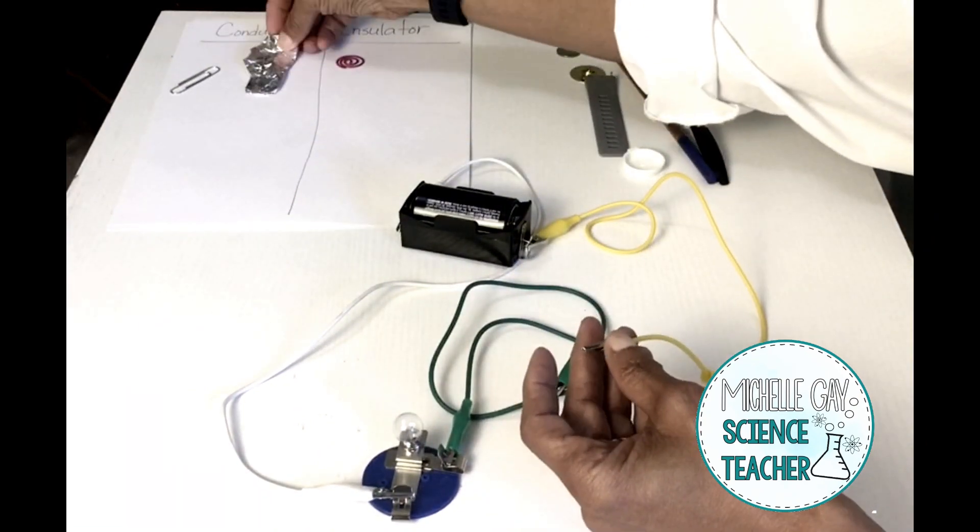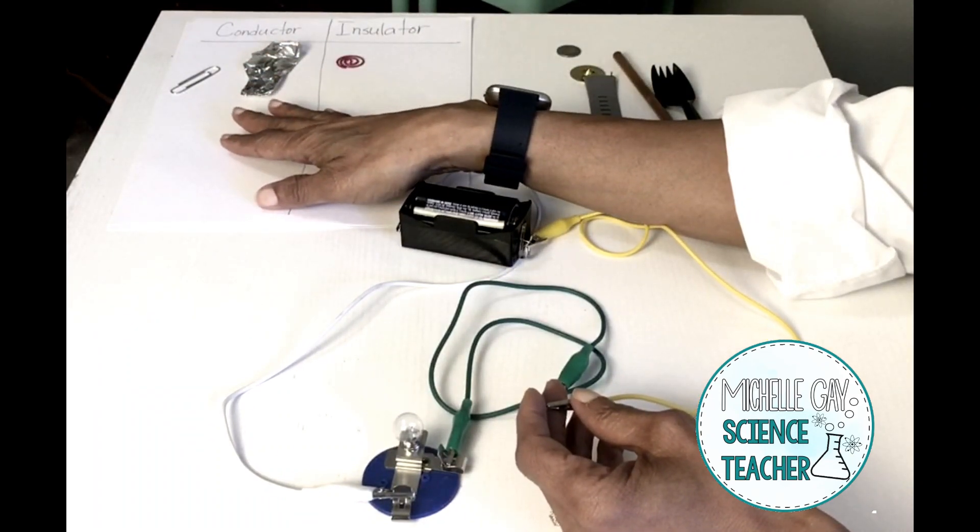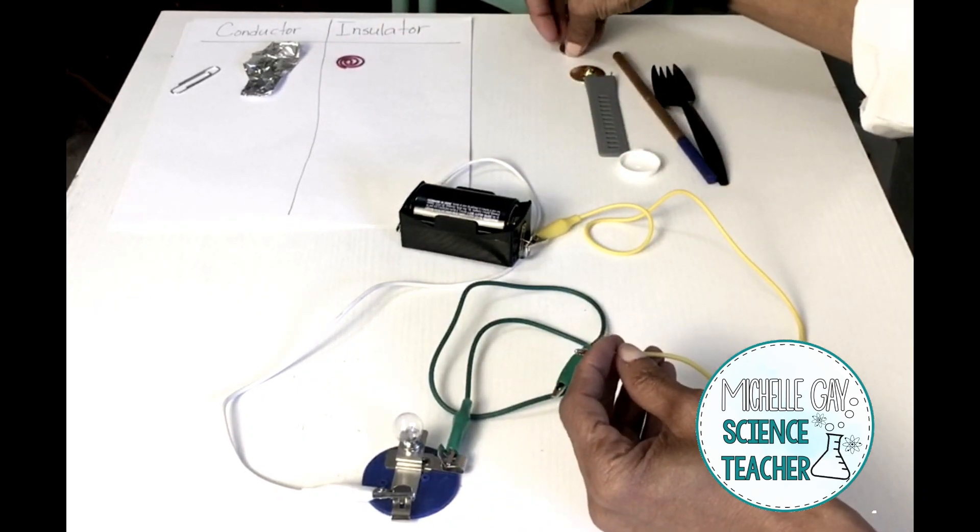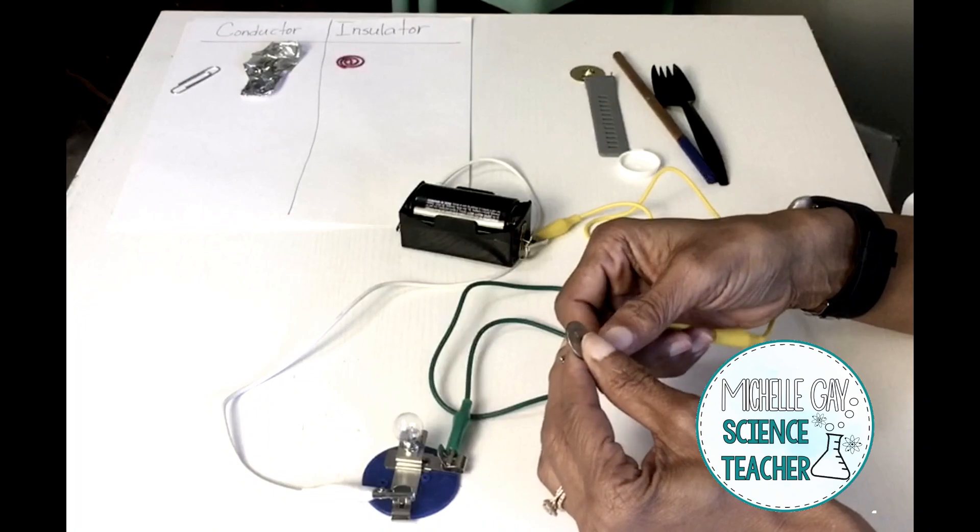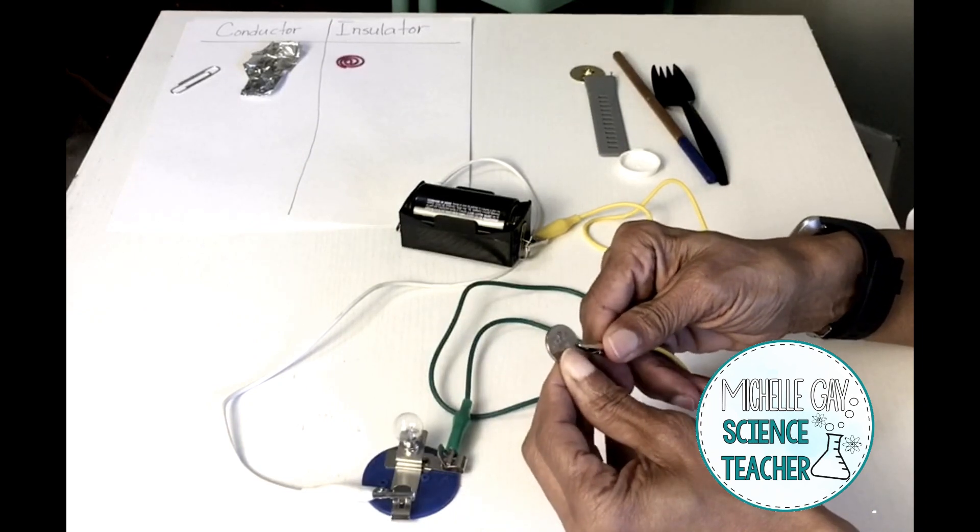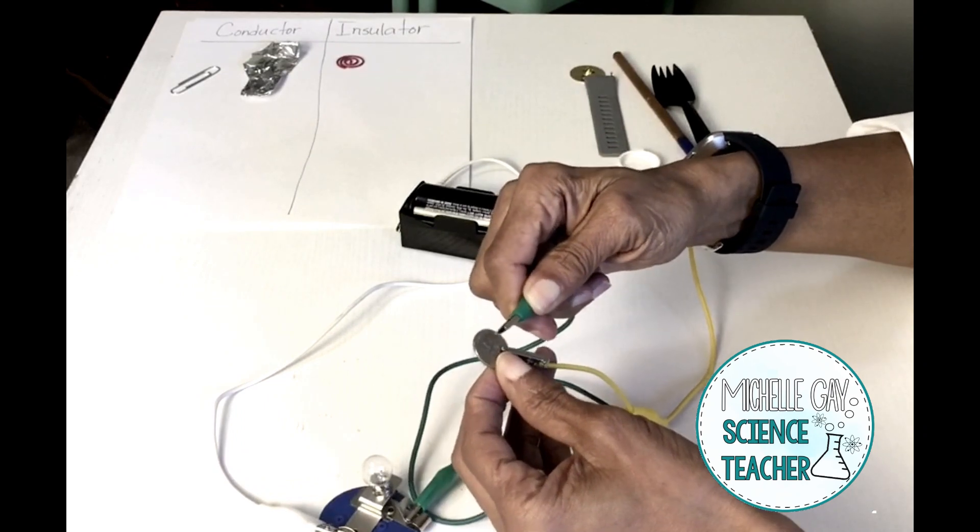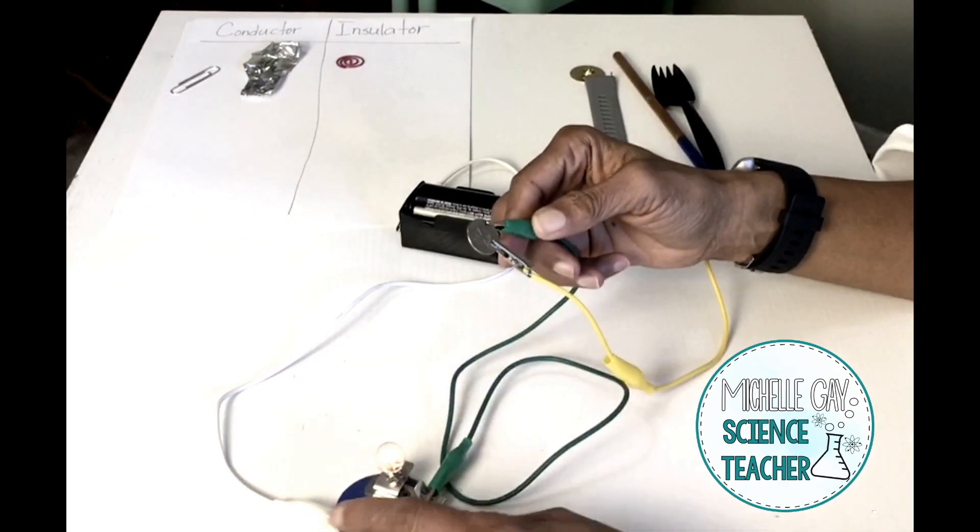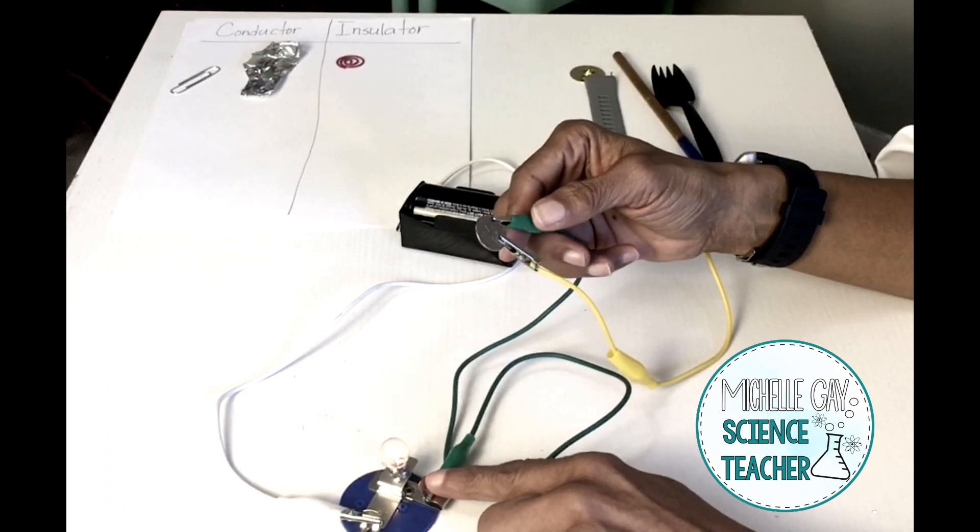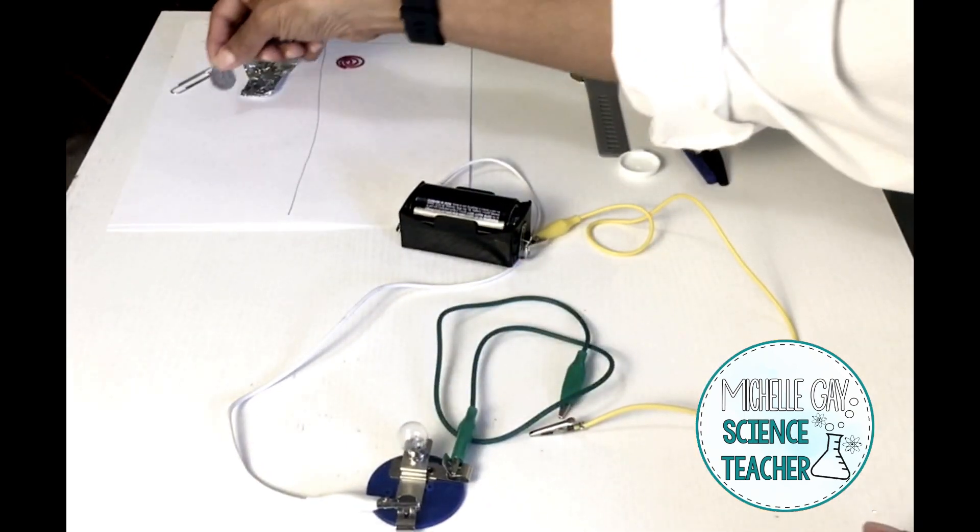Begin to observe the materials for the conductors and materials that are insulators and see how they are different or how they are alike. We're going to test the dime. The dime is a conductor. Notice the light bulb has come on again. What is the dime made of?